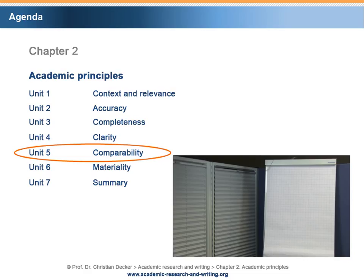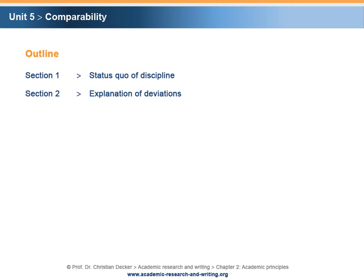In Unit 5, we will familiarize ourselves with the academic principle of comparability. This unit is divided into two sections. Section 1: Status quo of discipline.